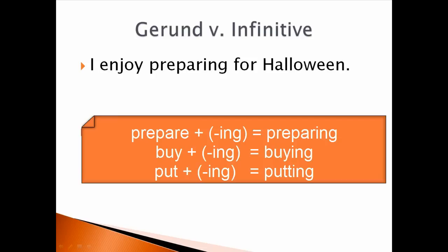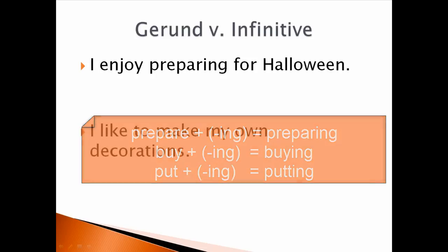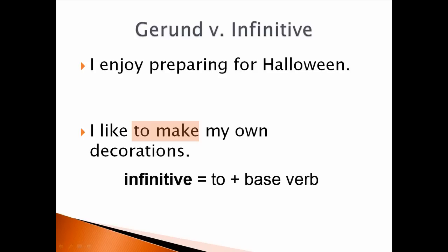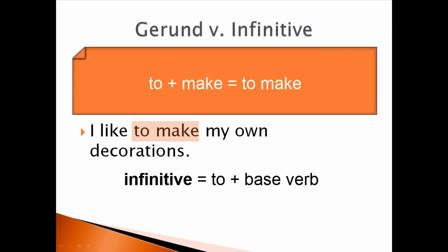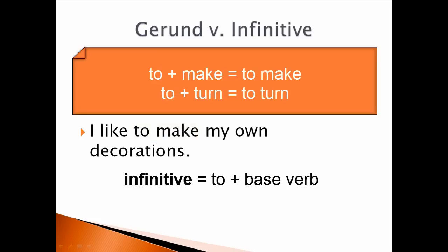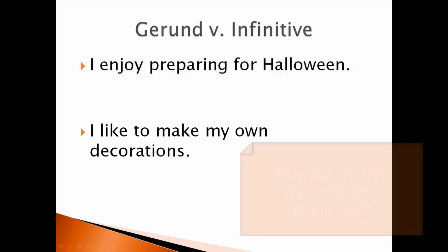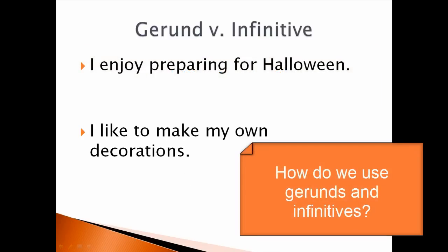In my opening talk I also used these gerunds: buying, putting. Now look at the second sentence: 'I like to make my own decorations.' Can you identify the infinitive? It's 'to make.' We form an infinitive by combining 'to' plus a base verb: to make. Another infinitive you heard me use was 'to turn.' Now that you know how to form a gerund and infinitive, let's talk about how we use them.